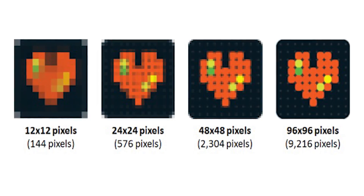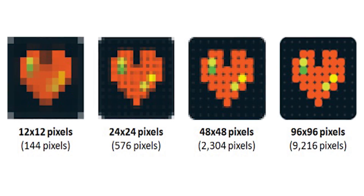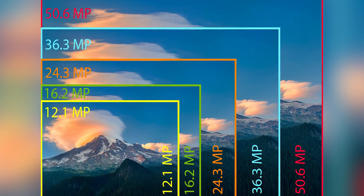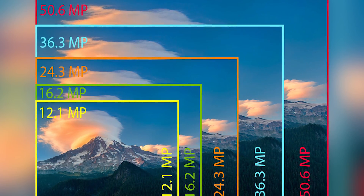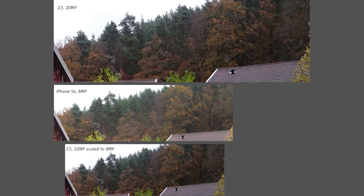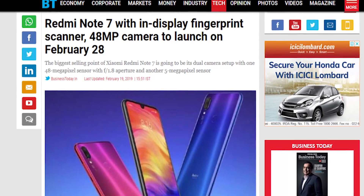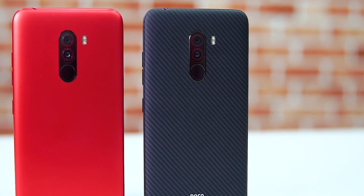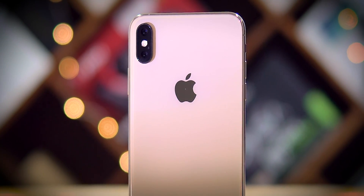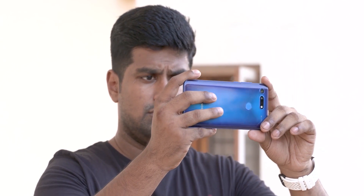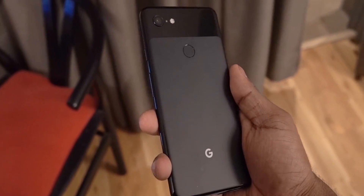But here's the thing: in order for you to see a significant improvement in image quality, you need to have a 4 times increase in megapixel count. So say you have a 5 megapixel sensor — you need to move to a 20 megapixel sensor to see a significant change in image quality. Which is why brands are now pushing 48 megapixels, because 48 is 4 times 12, 12 being one of the most common camera specs on smartphones these days. So when you're on the lookout for a great camera, keep in mind a 48 megapixel sensor isn't always better than a 12 megapixel sensor.